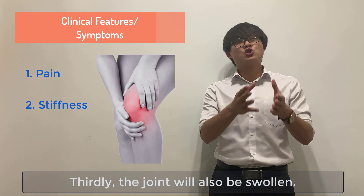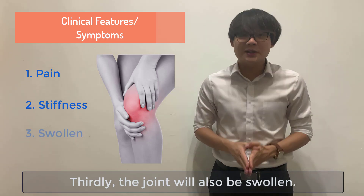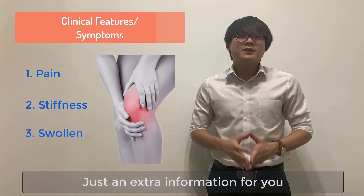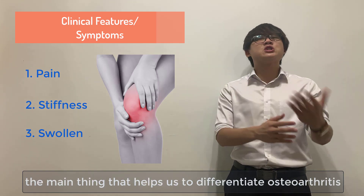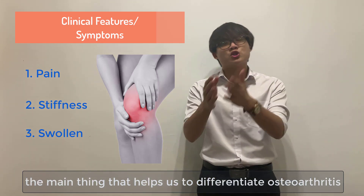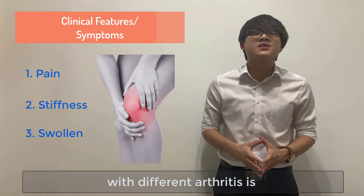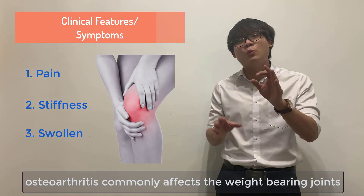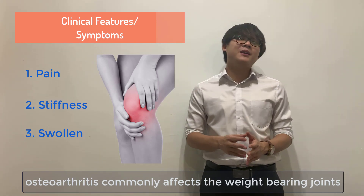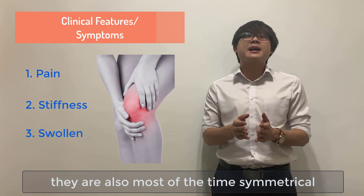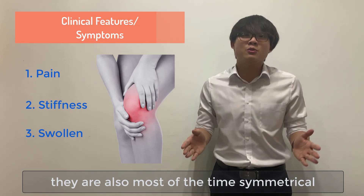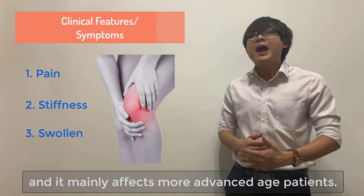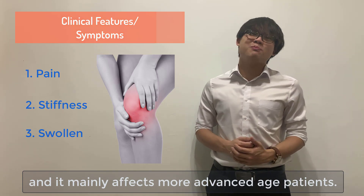And thirdly, the joint will also be swollen. As extra information, the main thing that helps us differentiate osteoarthritis from other types of arthritis is that osteoarthritis commonly affects the weight-bearing joints, and they are also most of the time symmetrical, which means they happen on both sides, and it mainly affects more advanced age patients.